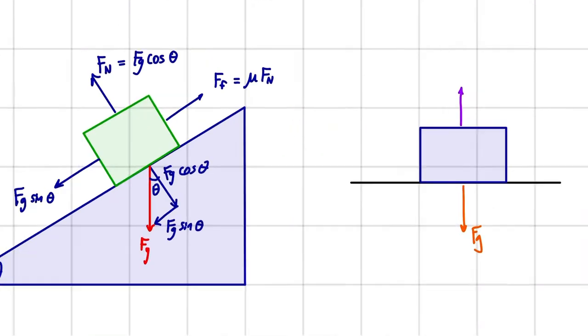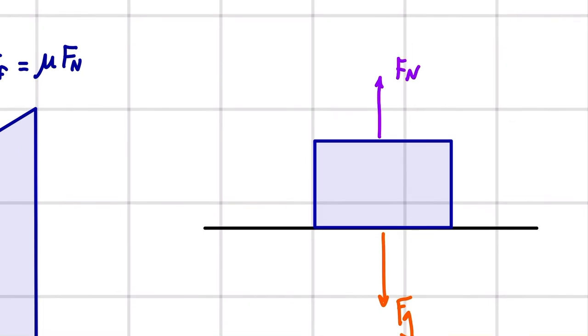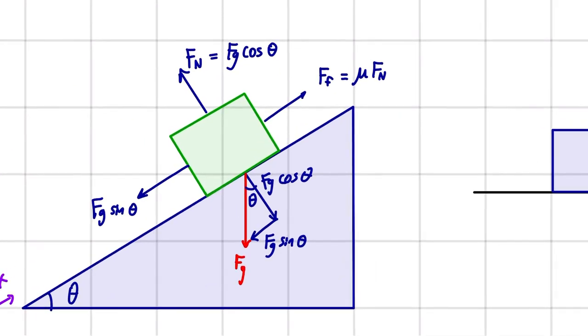So in this example here you see, the normal force - yeah, so we have gravity going down. The normal force is not just going up. The normal force is going perpendicular to the surface of the ramp. This is a 90 degree angle.